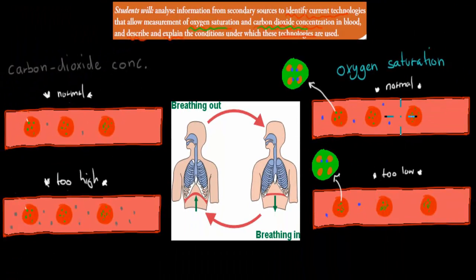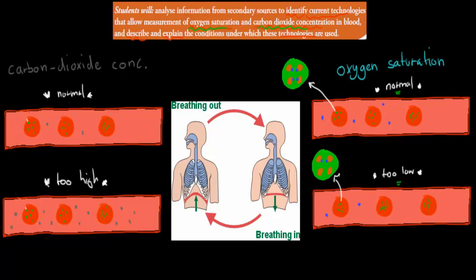Before we start I'll quickly talk about what oxygen saturation and carbon dioxide concentrations actually mean. In our blood we have two scenarios: one scenario where oxygen saturation is normal, and one scenario where oxygen saturation is too low. More or less, it's just how much oxygen is in our blood. Here we have four theoretical oxygen particles swimming around in our blood, and obviously lots of them in our red blood cells as well.